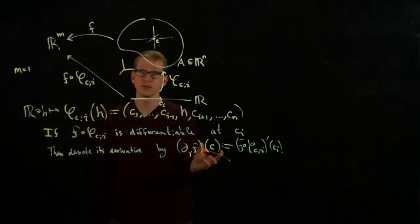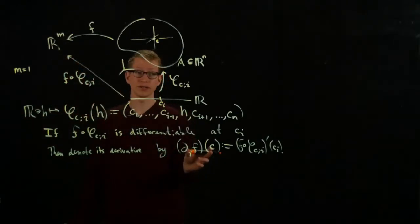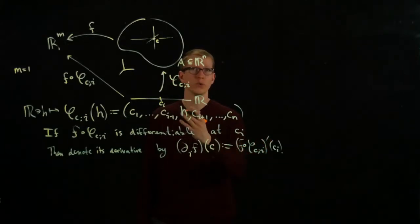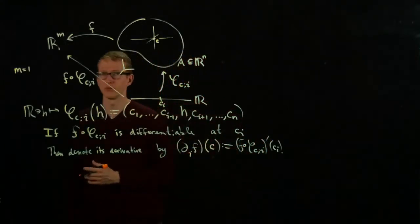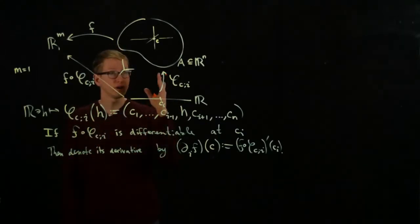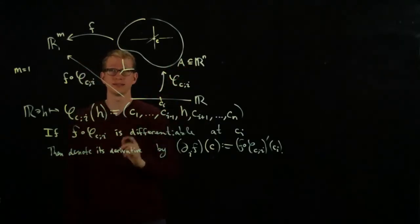This is probably something you've seen in a multivariable calculus course. This is a more precise definition of what the partial derivative is. We are not making any assumptions about whether F is differentiable as a function from R^n to R^m at C.